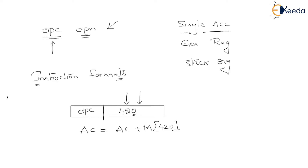Generally, every time you perform an arithmetic operation, you require a minimum of two operands. An arithmetic operation requires two operands. In the single accumulator organization, the instruction supports one operand, and the other operand is always the accumulator.